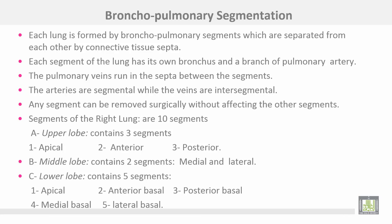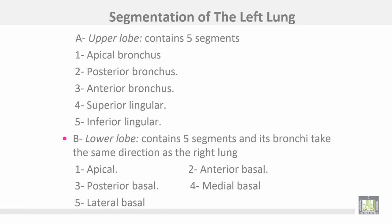Segments of the right lung: there are 10 segments. The upper lobe contains three: apical, anterior, and posterior. The middle lobe contains two segments: medial and lateral. The lower lobe contains five segments: apical and four basal — anterior basal, posterior basal, medial basal, and lateral basal.